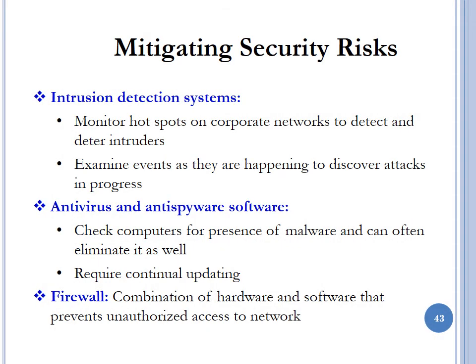With the different threats identified, the logical question is how do we mitigate against these security risks? One mitigating strategy is to have intrusion detection systems, used to monitor hotspots on corporate networks to detect and deter intruders, examining events as they happen to discover attacks in progress. Companies may also use antivirus and anti-spyware software to check computers for the presence of malware and often eliminate it. However, this requires continual updating to ensure the antivirus responds to new attacks.